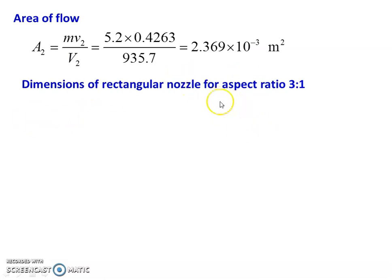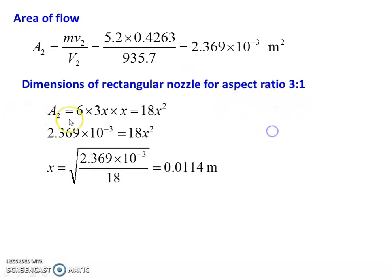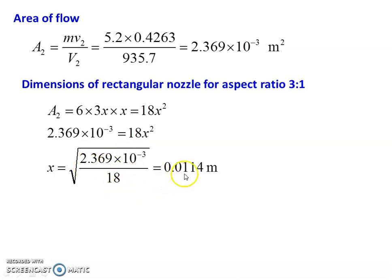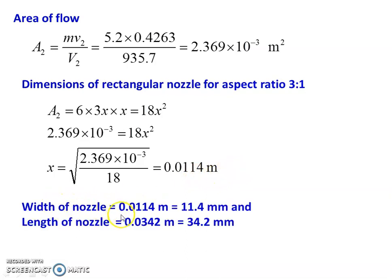Dimensions of rectangular nozzle for aspect ratio 3:1 with 6 nozzles: A2 = 6 × (3x × x) = 18x². So 2.369 × 10⁻³ = 18x², giving x = sqrt(2.369 × 10⁻³ / 18) = 0.0114 m. Width of nozzle = 0.0114 m = 11.4 mm and length of nozzle = 3x = 0.0342 m = 34.2 mm.